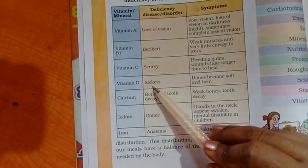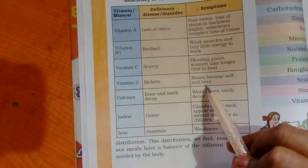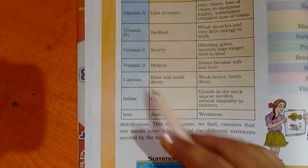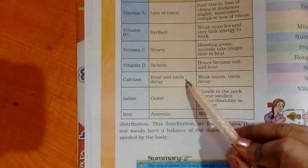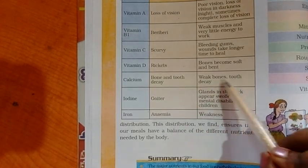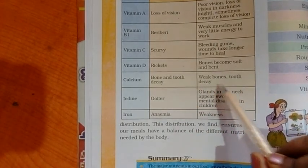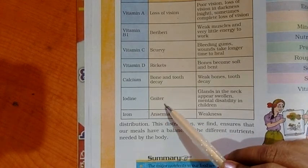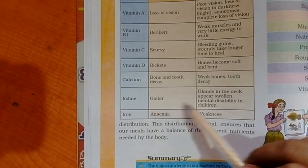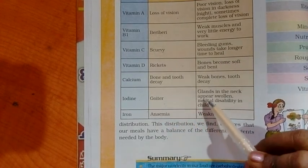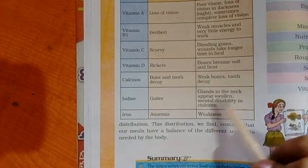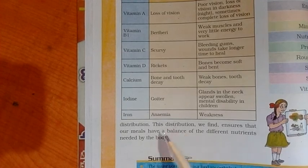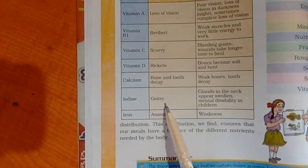Vitamin D deficiency causes rickets — bones become soft and bent. Calcium deficiency leads to bone and tooth decay, with symptoms of weak bones and tooth decay. Iodine deficiency causes goiter, with symptoms including swelling of glands in the neck and mental disability in children.